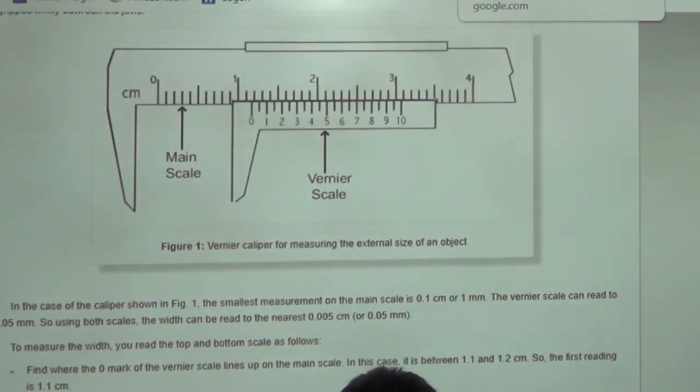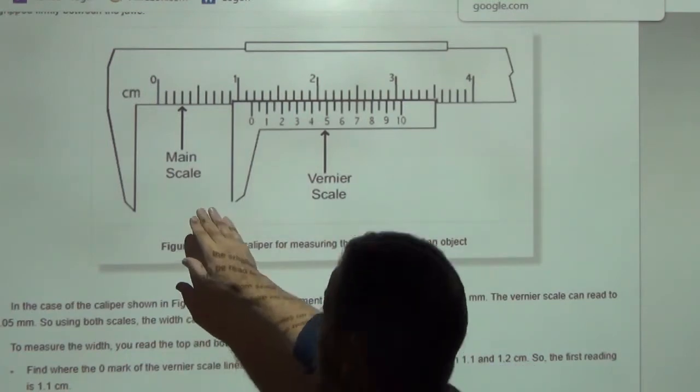Now, that wouldn't be bad. You could estimate that. Well, it's a little more than 1.1, it's closer to 1.2, you know, 1.17, whatever. You could just make a guess as to what that is. But if we look here...